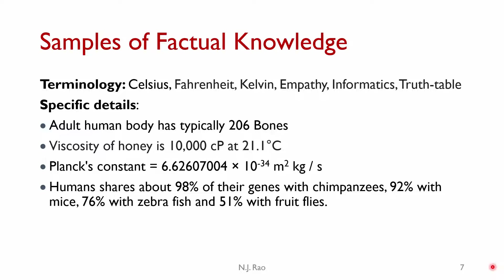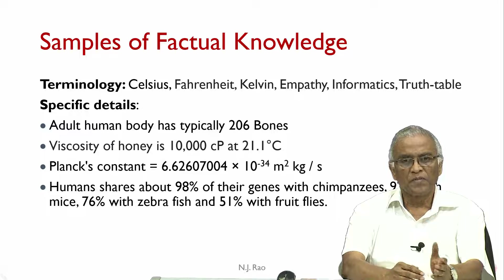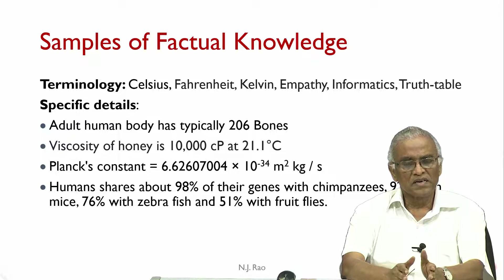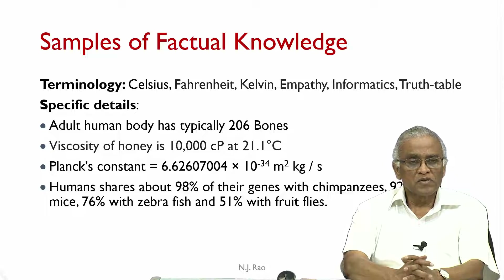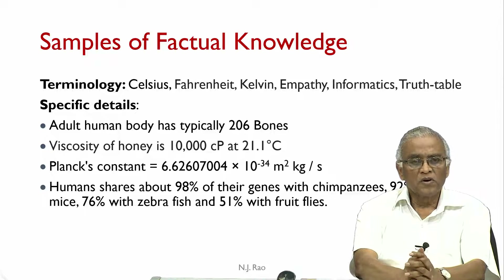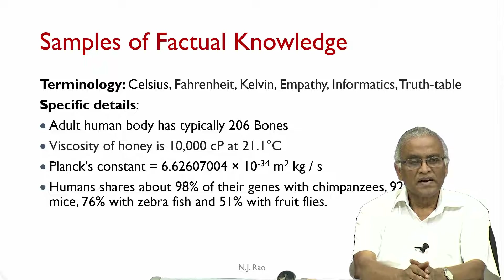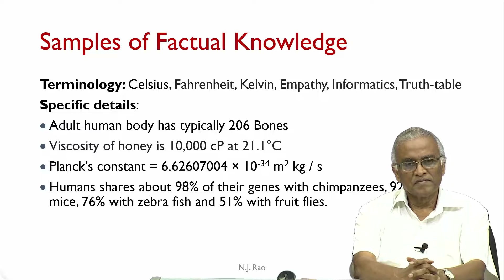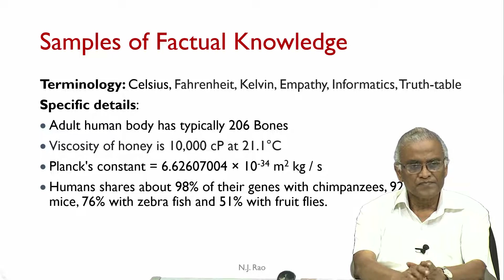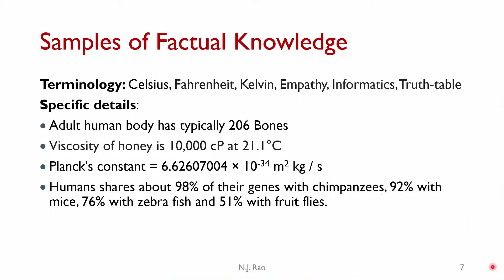Terminology examples include Celsius, Fahrenheit, Kelvin, empathy, informatics, and truth table — every subject has a large number of such specific terms. Examples of specific details include: the adult human body has 206 bones; viscosity of honey is 10,000 Cp at 21.1°C; Planck's constant is 6.626 × 10⁻³⁴ m²·kg/s; and humans share about 98% of their genes with chimpanzees, 92% with mice, 76% with zebrafish, and 51% with fruit flies. These are factual information.